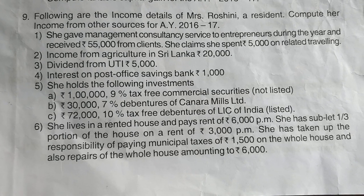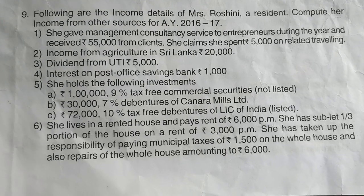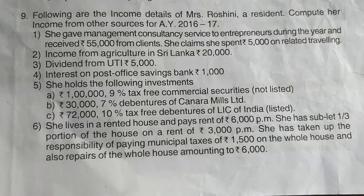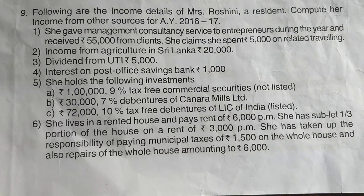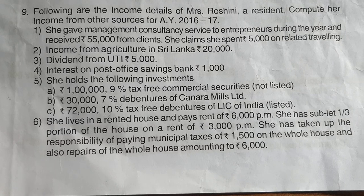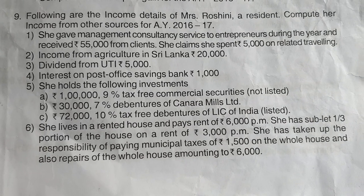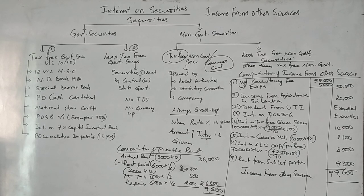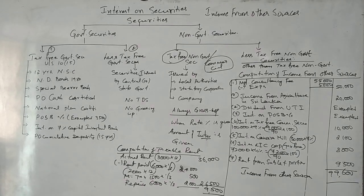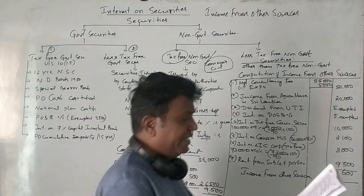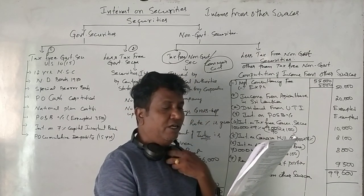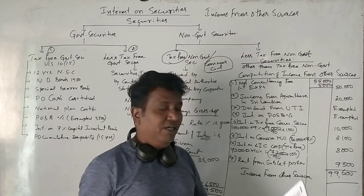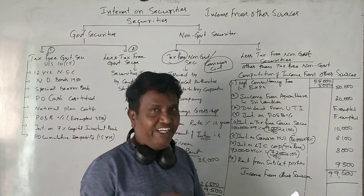This is a 2017 question paper. The question is about the following income details of Mrs. Roshini, a resident. Compute income from other sources for the assessment year 2016-17.